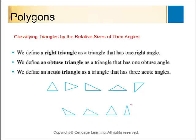For classifying triangles by angles: a right triangle has one right angle. An obtuse triangle has one large angle greater than 90°. An acute triangle has three acute angles. An equilateral triangle is also an acute triangle because all three angles must equal 60° — since the interior angles of a triangle add up to 180°, and all angles are equal, each must be 60°.